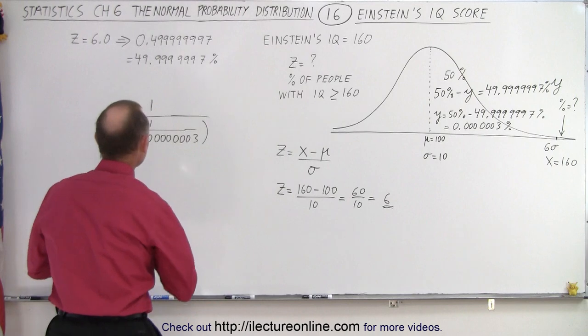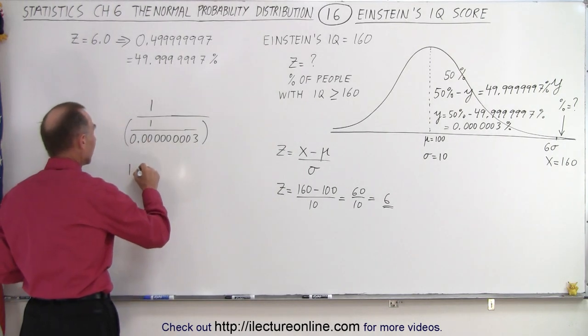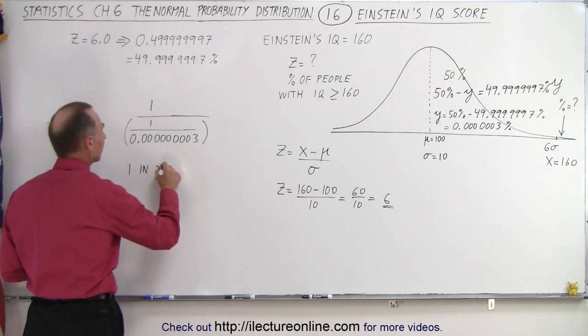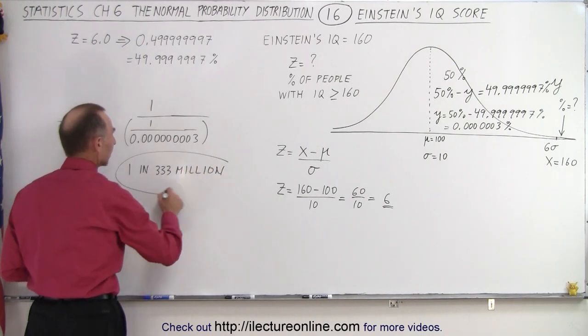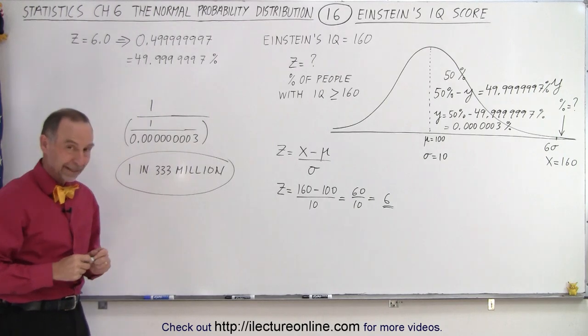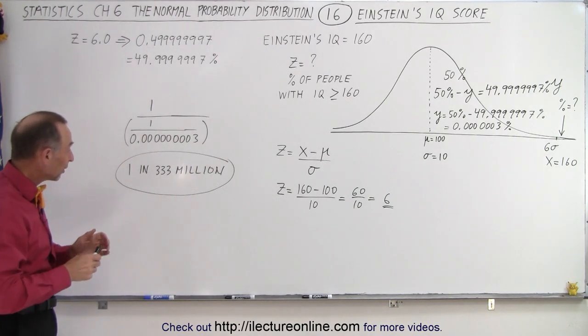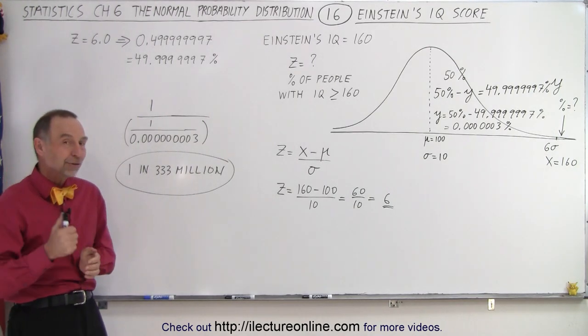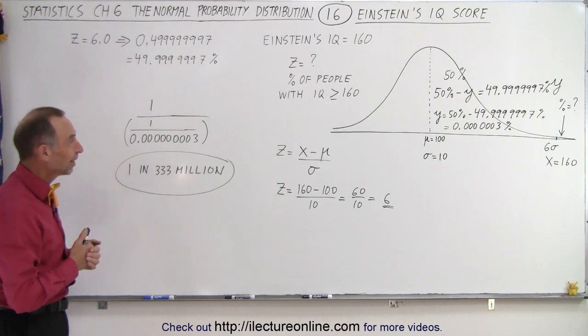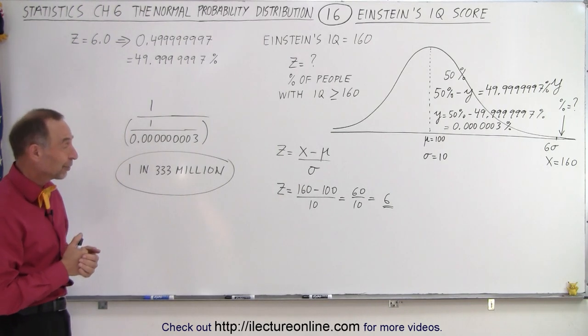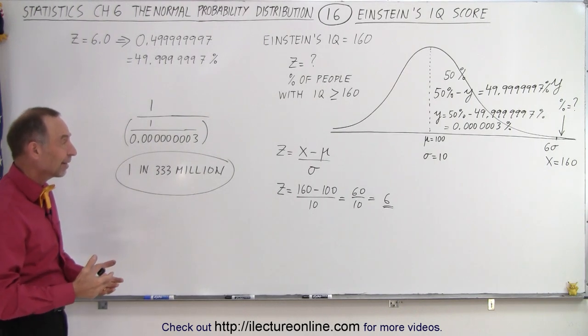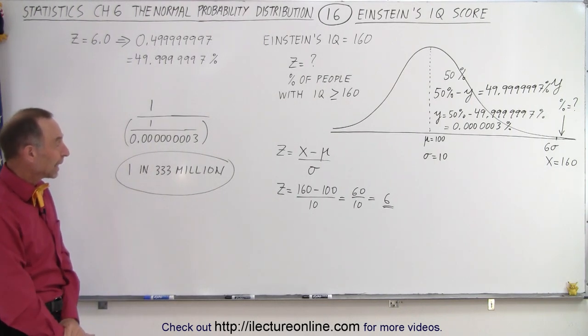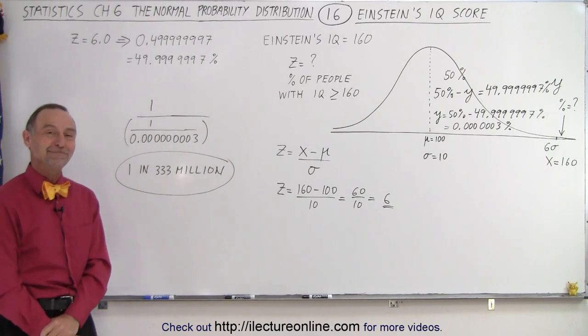So, roughly speaking, that is 1 in 333 million people. So, on average, 1 in 333 million people are as smart or smarter than Einstein. So, he was a very unique individual that had a tremendous ability to figure things out that other people couldn't do. And yes, it did require quite an IQ. And that is how it's done.